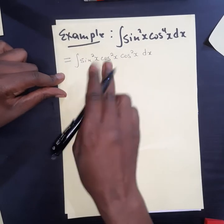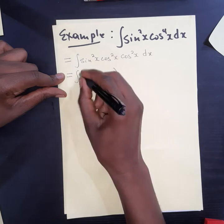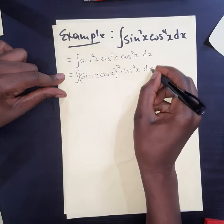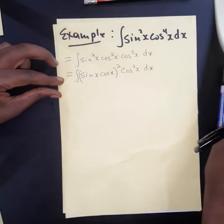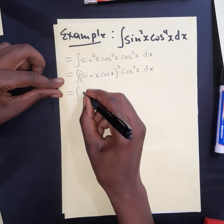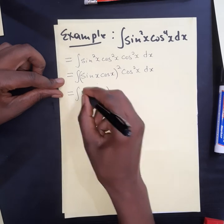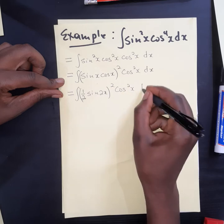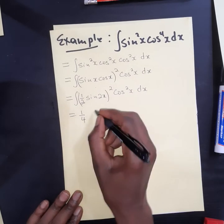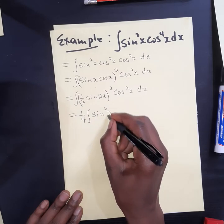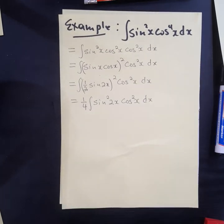Then if you manage to look at it in this manner, then it will be easy to see that this can be written as sine of x cosine of x, cosine squared of x dx. This now brings us to this identity, which will give us half sine of 2x all squared, cosine squared of x dx. And we can write 1 over 4, the integral of sine squared of 2x, cosine squared of x dx.